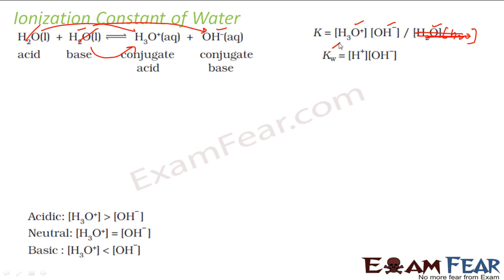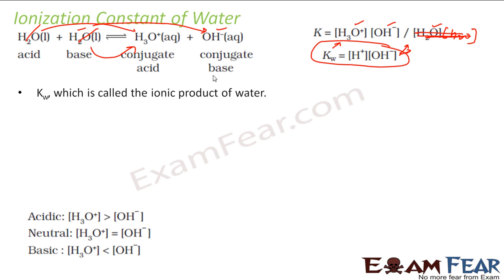So what we have is K = [H3O+][OH-], and this special K we call KW — the ionization constant of water — because here we are only using water. KW is nothing but [OH-][H+], similar to the equilibrium constant we have discussed, but since it involves only water giving H+ and OH-, we give it the special name KW. KW is also called the ionic product of water.